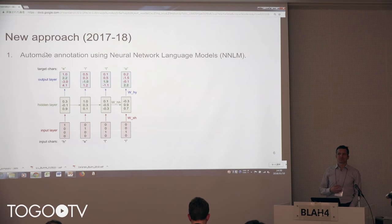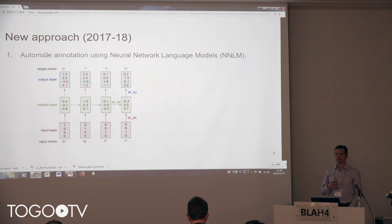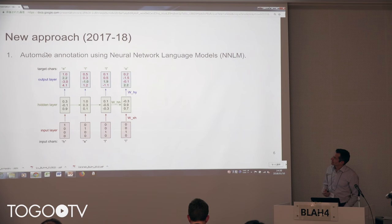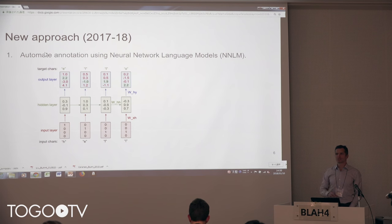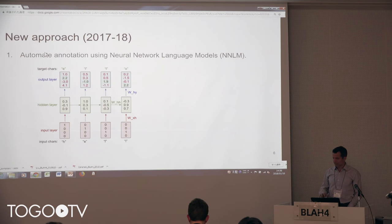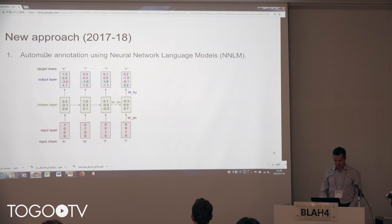Four years later, there has been a lot more work and a lot of new resources that have come — that can be used for a new approach based on neural network language models. What is shown here is a recurrent neural net that learns to create text on a character level, which is quite amazing. Of course, this is not going to work for biomedicine directly, but the scale can be regulated.